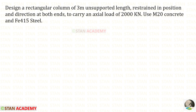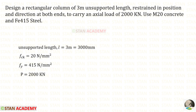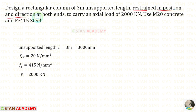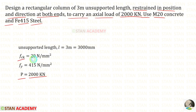Hello everyone. Today we are going to design an axially loaded rectangular column. Let us read the question and write the given data. Design a rectangular column of 3 meter unsupported length, restrained in position and direction at both ends, to carry an axial load of 2000 kN. Use M20 concrete and Fe415 steel. So FCK is given as 20 and Fy is given as 415.